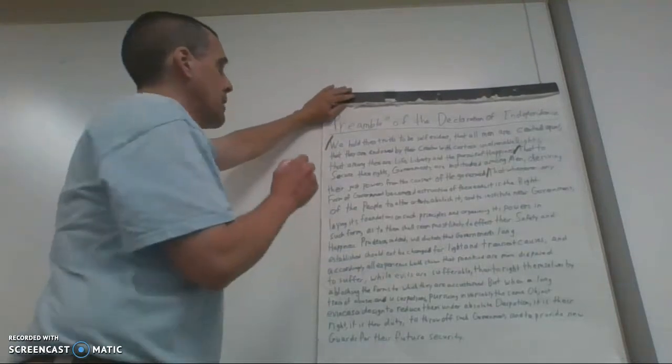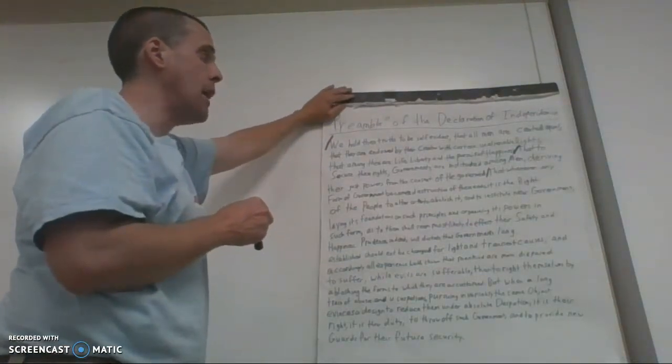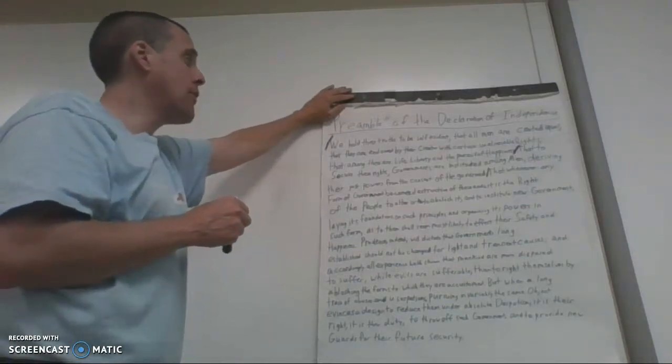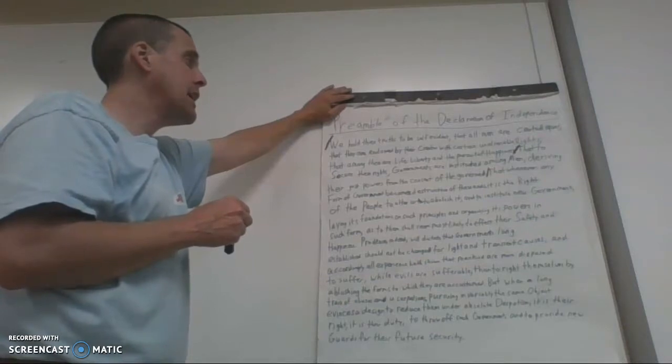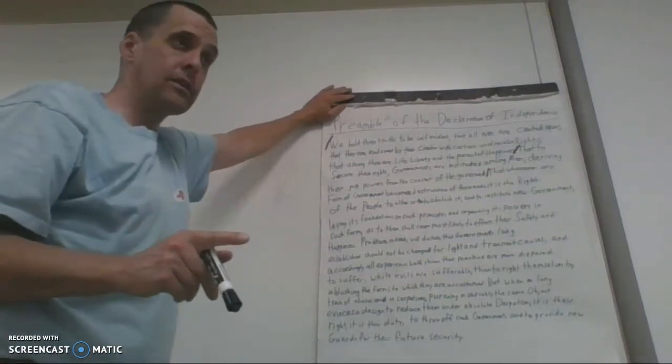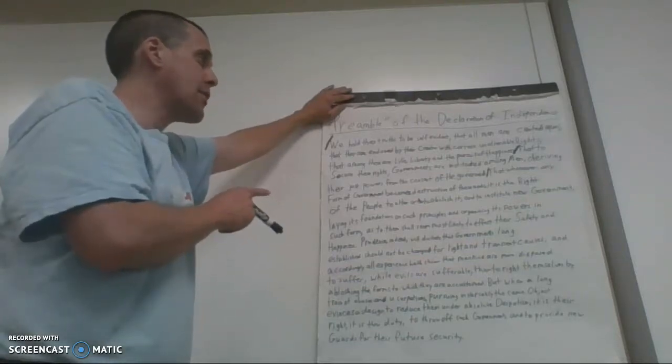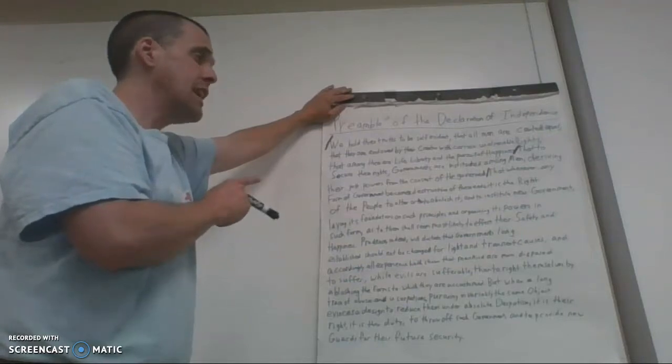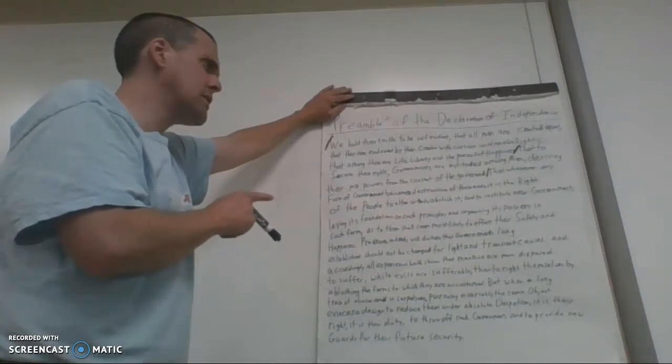So our first one, our first sentence is, we hold these truths to be self-evident that all men are created equal, that they are endowed by their creator with certain unalienable rights, that among these are life, liberty, and the pursuit of happiness. And later on, because I know you have it in front of you, I want you to notice, some of these words are capitalized that are not in the front of the sentence, and they're not names or titles. So you need to figure out why that is, because there is a reason.